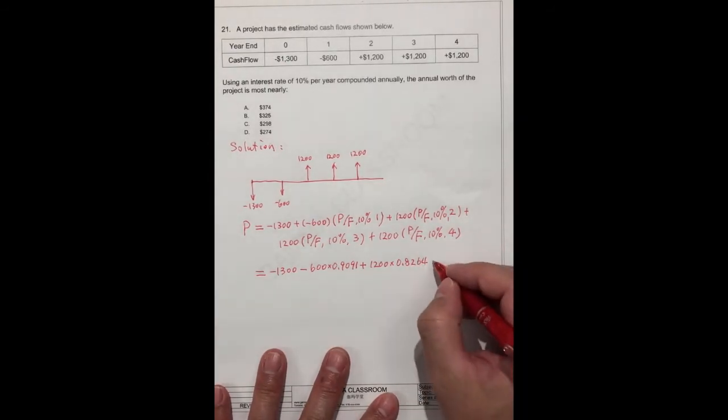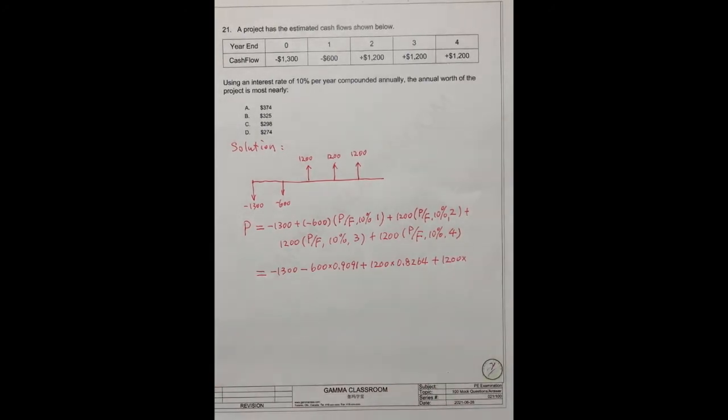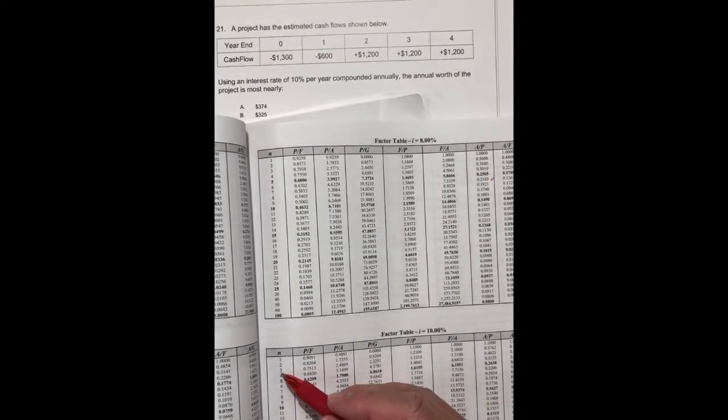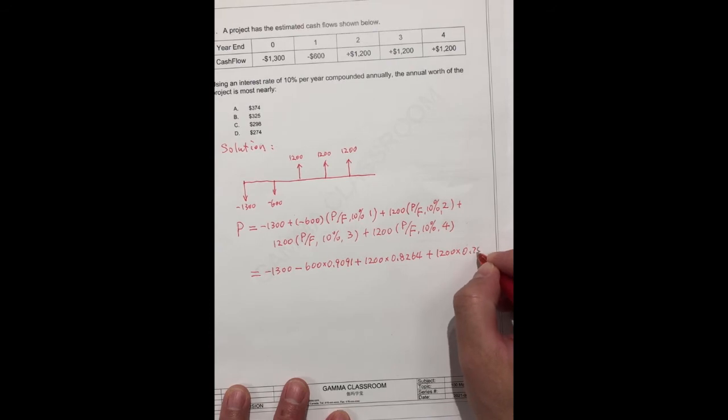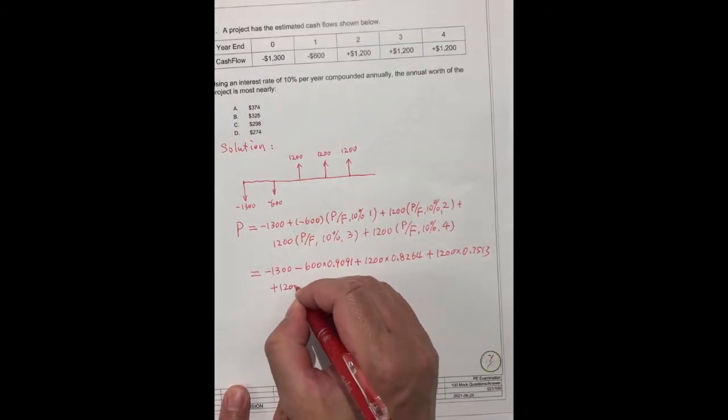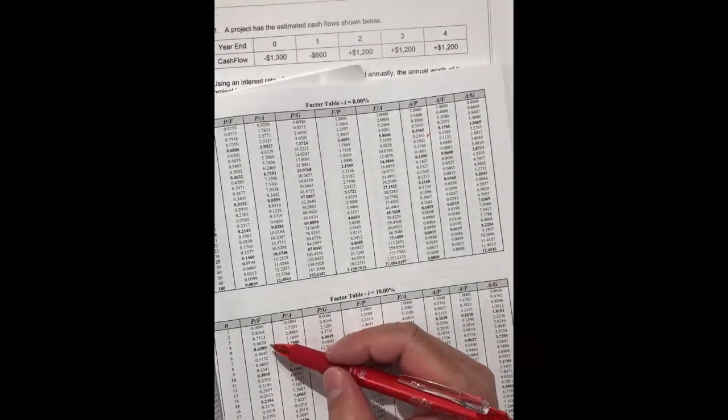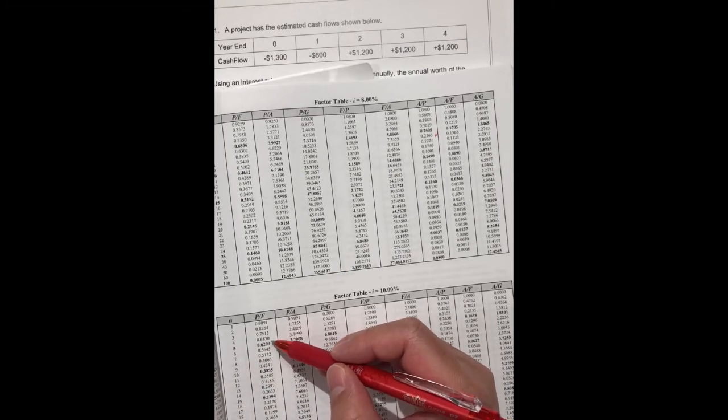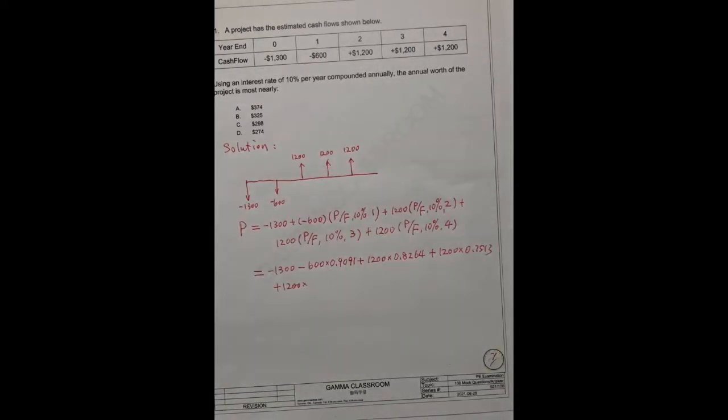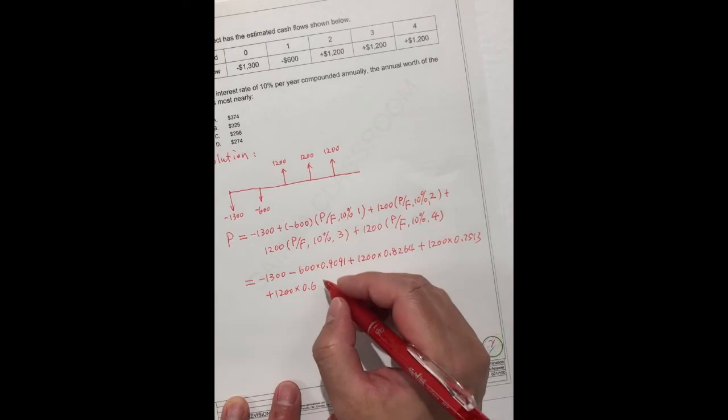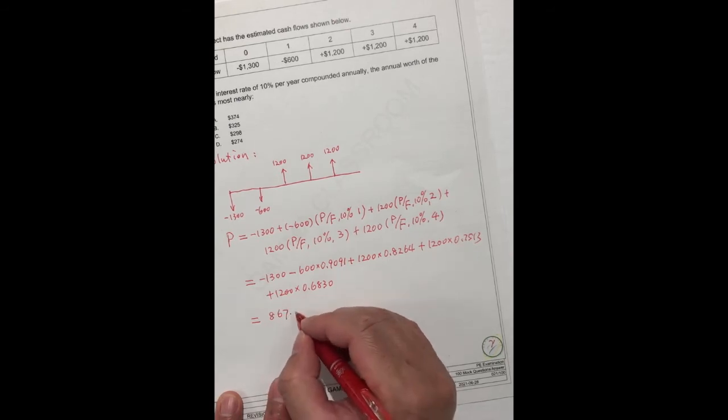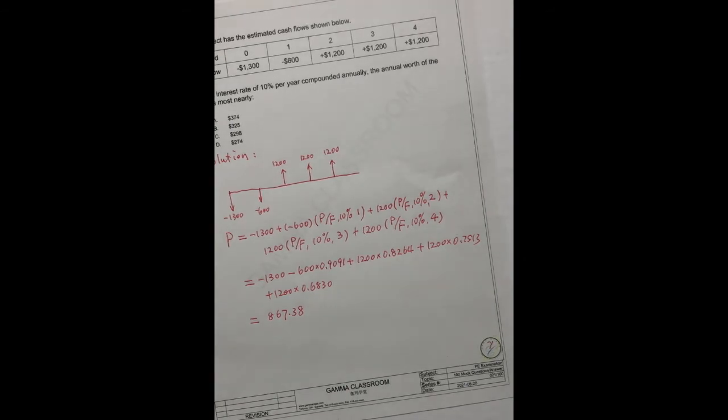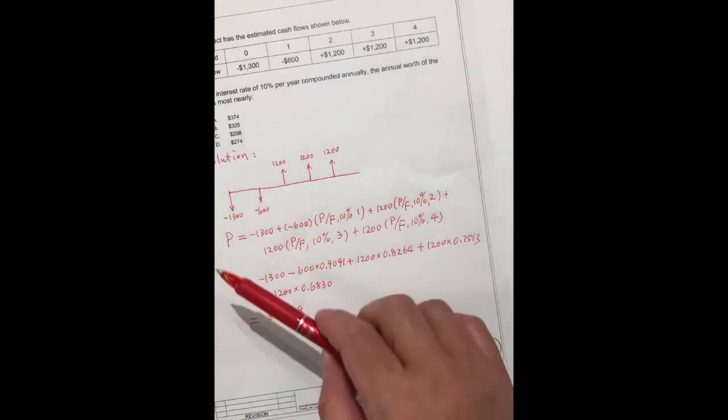0.8264. Plus $1,200 times 10% three years. This is 0.7513. And plus $1,200 times four years later. The four years later is this number, 0.6830. So we can get the number, it's 867.38. This is for all the projects transferred to the present value.